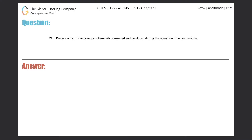Number 21: prepare a list of the principal chemicals consumed and produced during the operation of an automobile. So we just need to make a list of what is used up, meaning consumed, and what is produced, meaning made. I'm going to make a little chart here — consumed on one side and produced on the other.